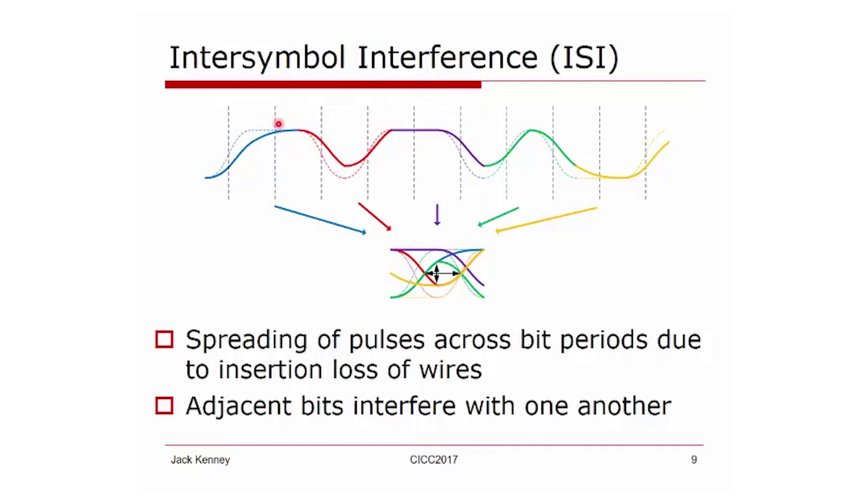You can imagine that if the tail from this leading bit strays into the adjacent bit, then we no longer go to that full negative value.